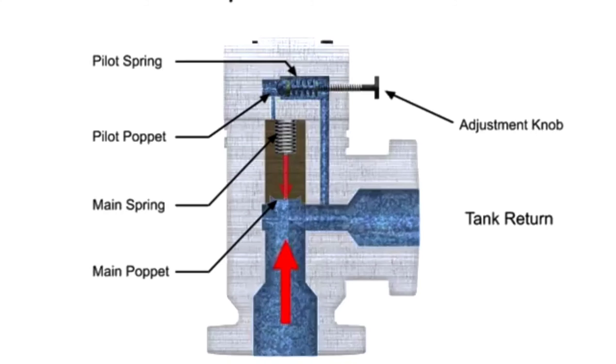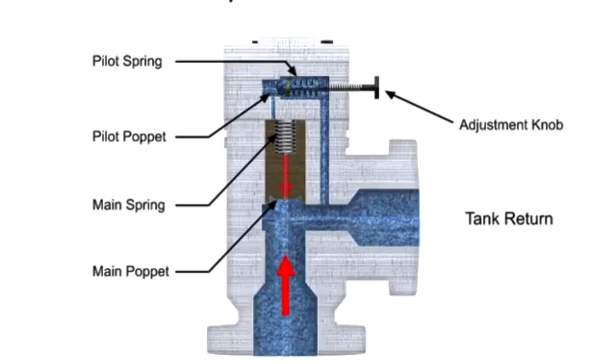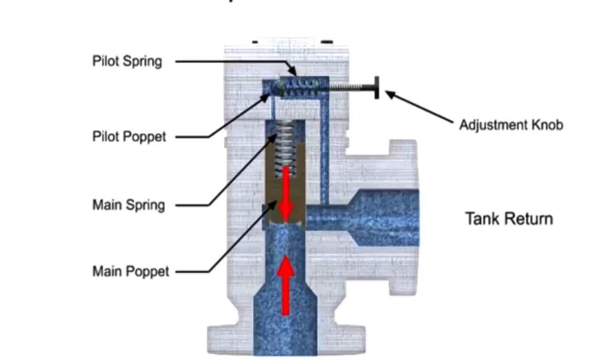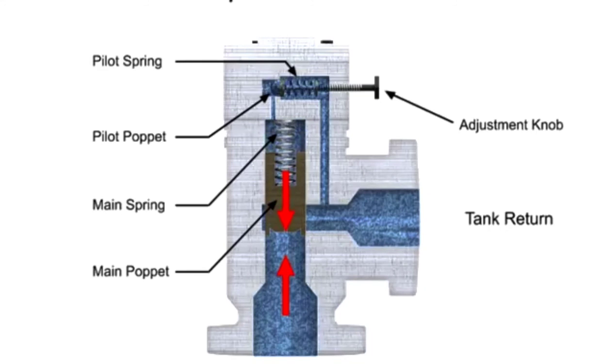The same is true in reverse. As the pump line pressure decreases below the relief pressure set by the adjustment knob, the pilot valve will close. This allows the main spool to close and restores a balance of pressure.